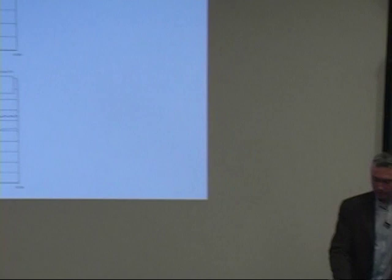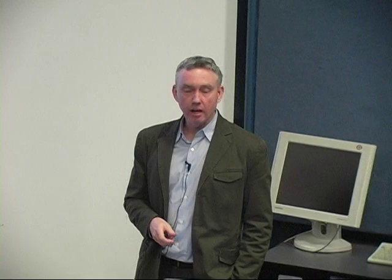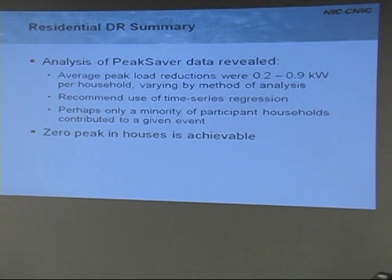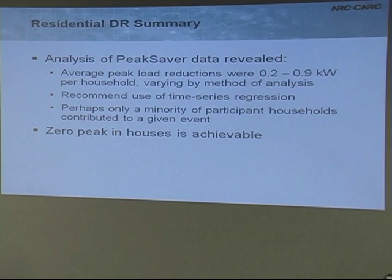To summarize: our analysis suggests Peak Saver was saving somewhere between 0.2 and 0.9 kilowatts on average per household, depending on the method of analysis used. We recommend time series regression as it gives the best answers, despite being the most complex. Only a minority of participants may actually be contributing meaningfully, which is an area for future work. We have shown that using Peak Saver and other methods, we can dramatically reduce peak residential load, which will be very useful to utilities going forward — and policy directions may be needed to encourage this.